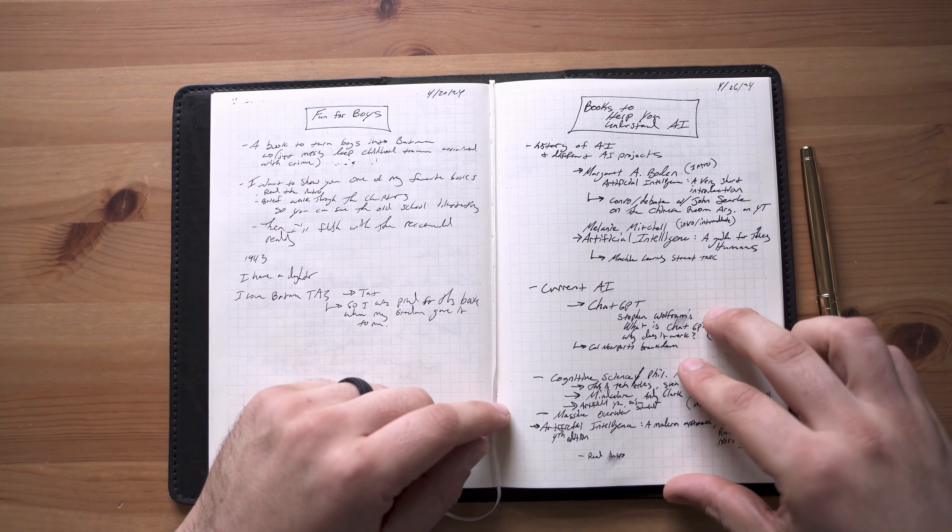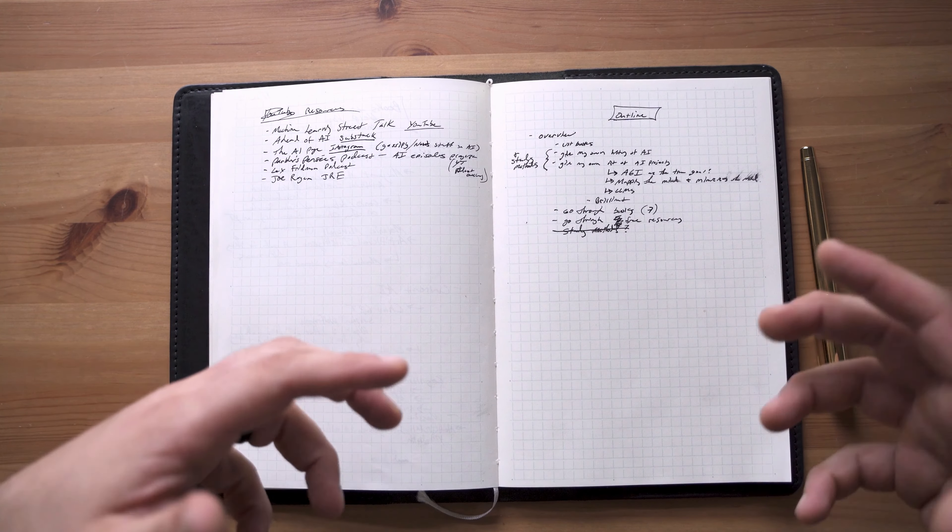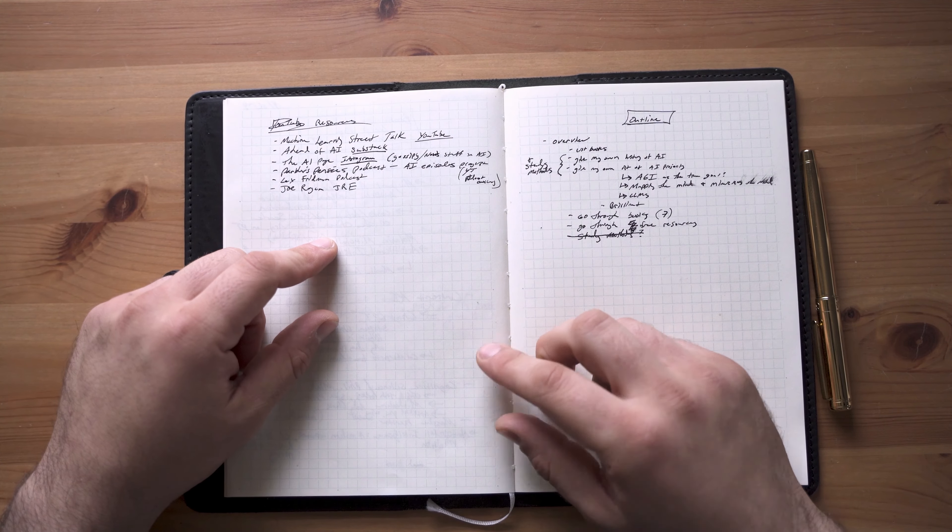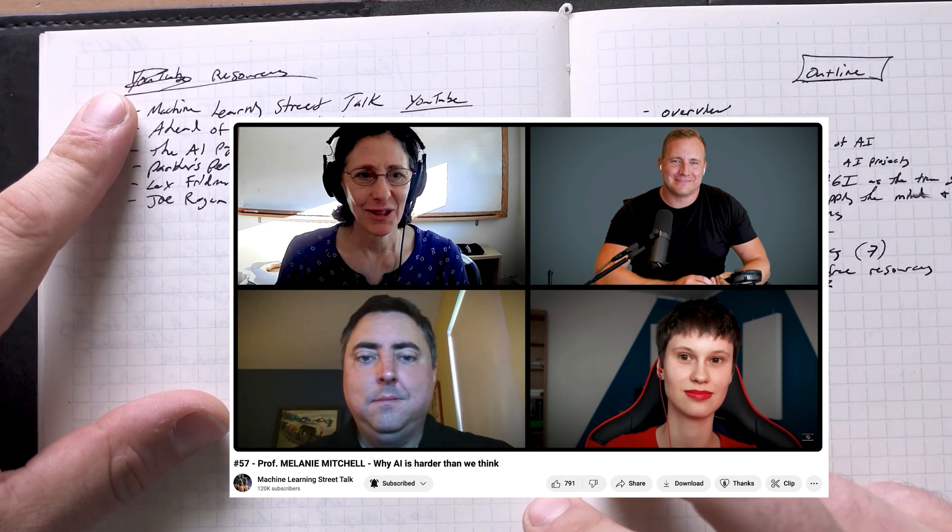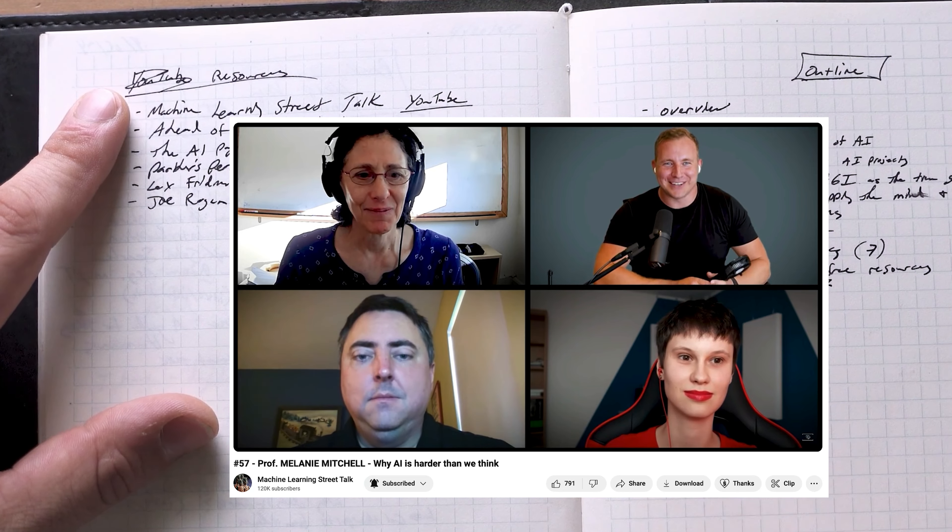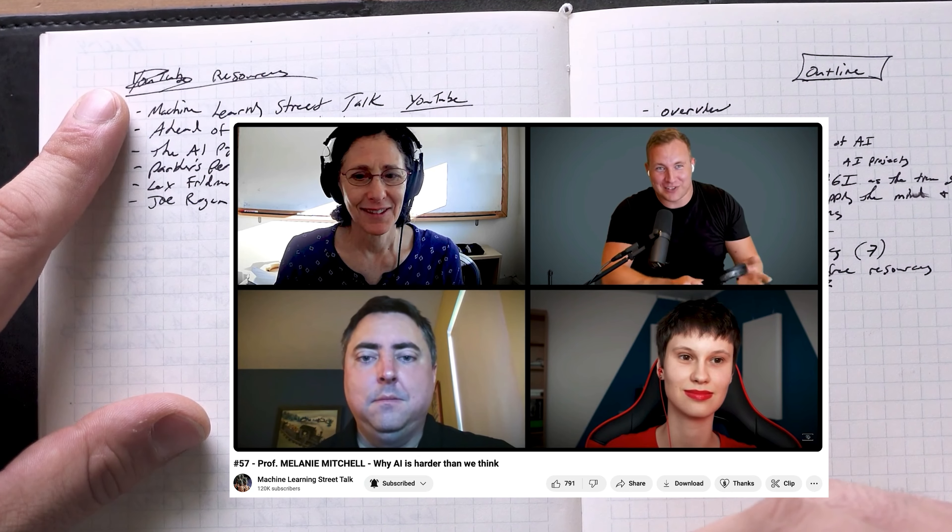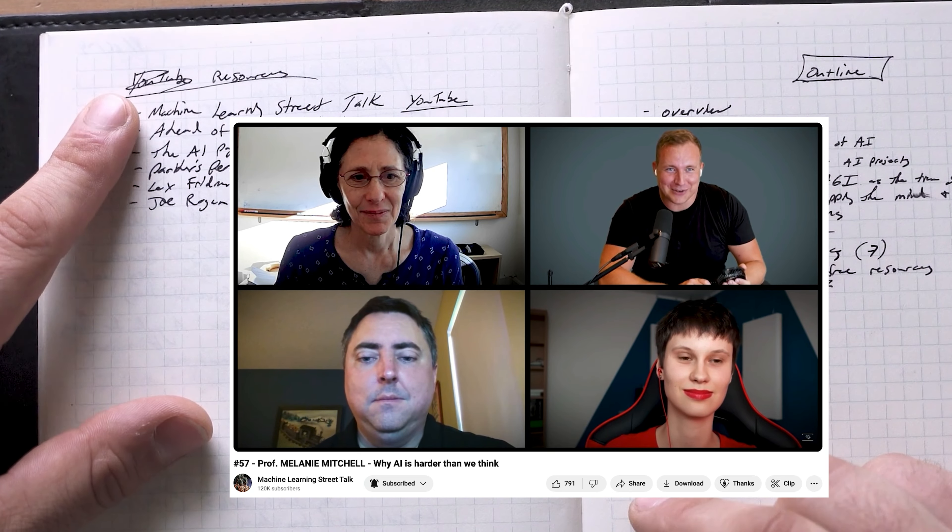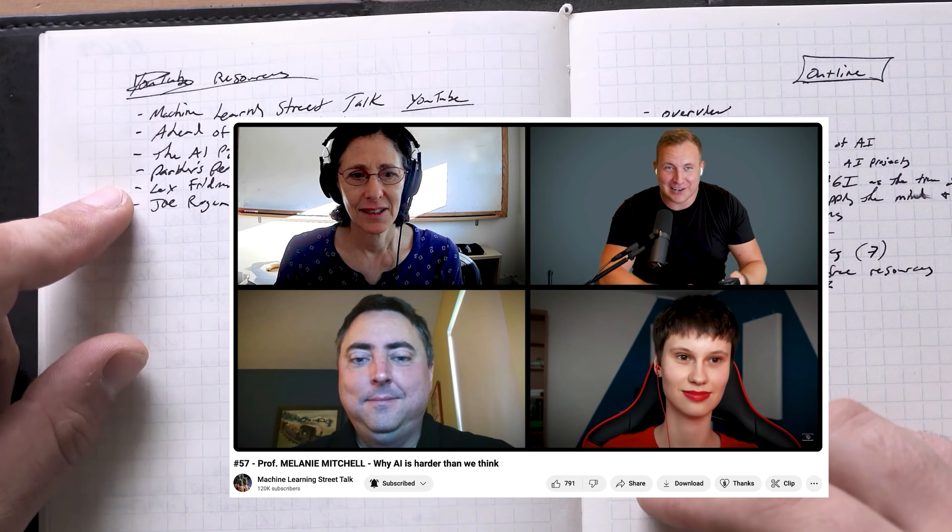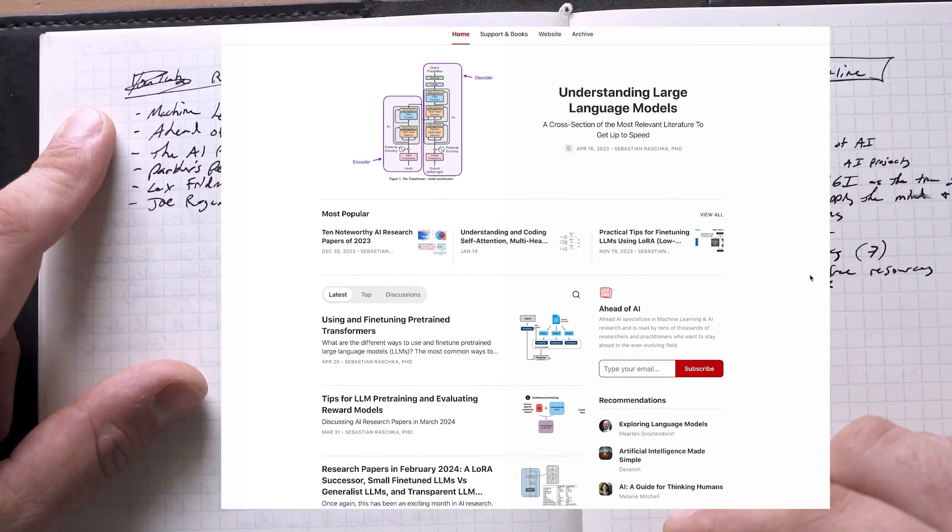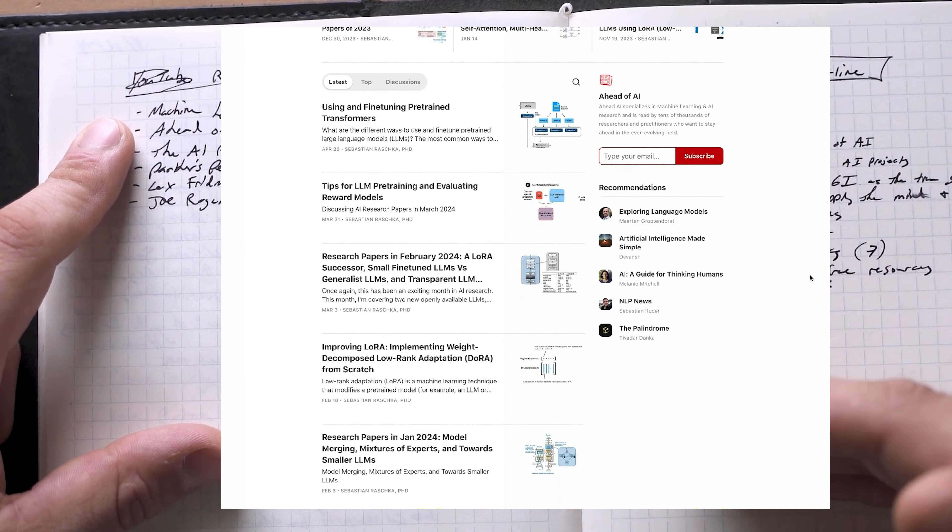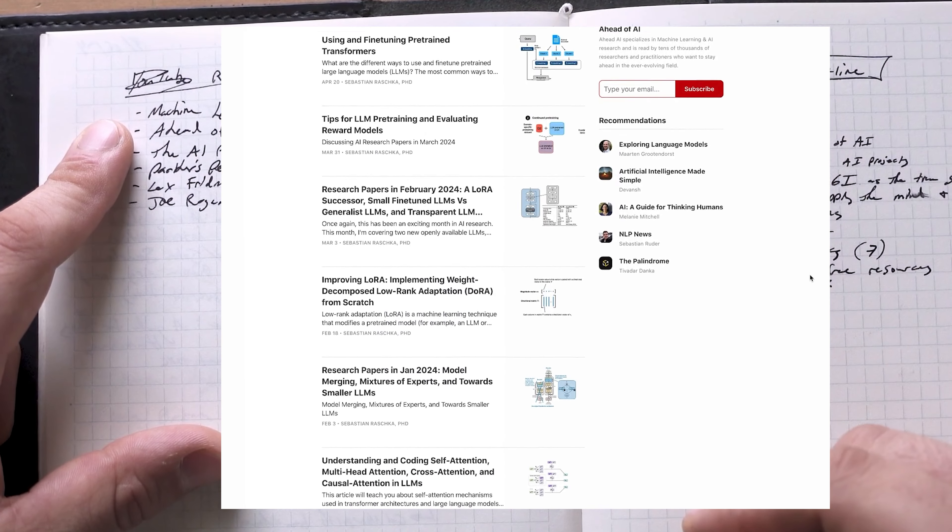So those are the books that I recommend in order to help you understand where we are with artificial intelligence. But there's also a lot of free resources that you can take advantage of today. There's the Machine Learning Street Talk podcast on YouTube. These guys are awesome. They don't only talk the engineering side of AI. They also get into the philosophical side of things. And they have really fantastic guests. I think this is where I first heard Melanie Mitchell, which led to me grabbing her book and taught me just a ton about AI. There's the great Substack page called Ahead of AI, where the author is on the cutting edge of developments in AI and keeps you abreast of all the new developments.